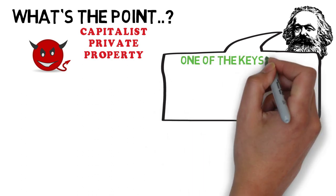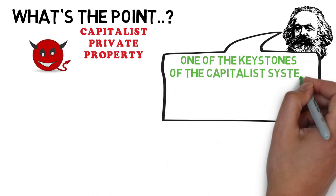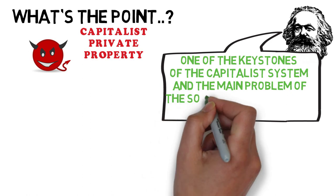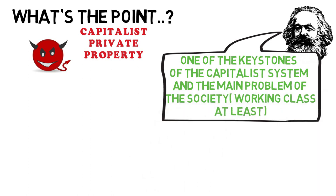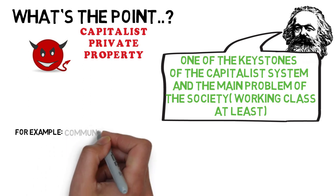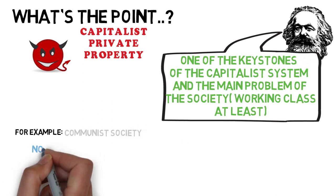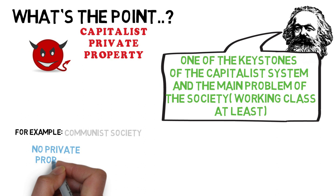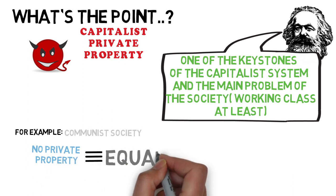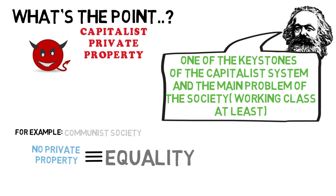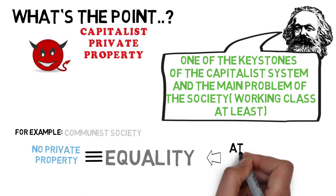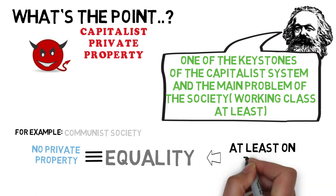Maybe not so dramatic, but he was convinced that private property is one of the keystones of the capitalist system and the main problem of society, or the working class at least. That's why in communist society there isn't any private property — because when the land is owned by the country everybody is equal, because the means of production are shared among everybody. Or that's the key idea behind it. But we all know too well that there is a difference between the theory and the practice.